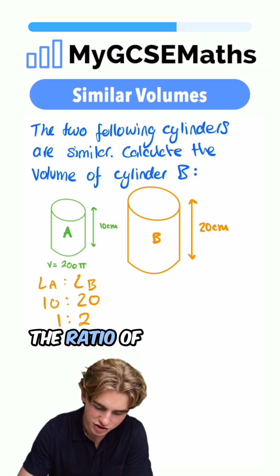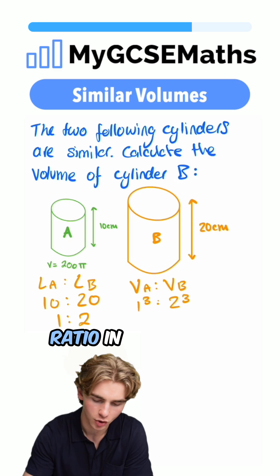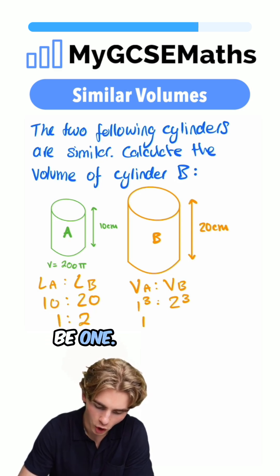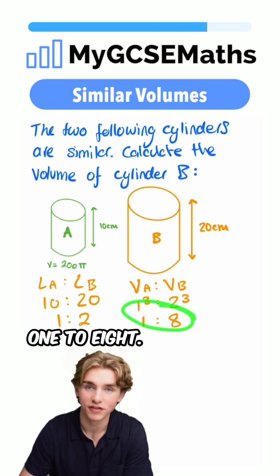So we can calculate the ratio of the volumes, the volume of A to the volume of B, and it's going to be 1 cubed to 2 cubed, cubing that ratio in the lengths. 1 cubed is just going to be 1, 2 cubed is going to be 8. So we know the ratio in the volumes is 1 to 8.